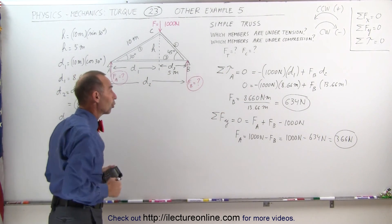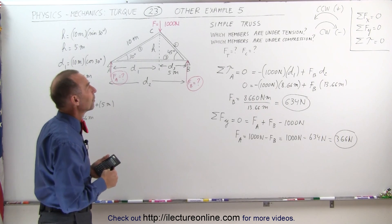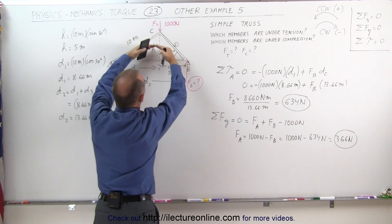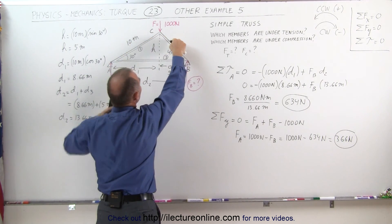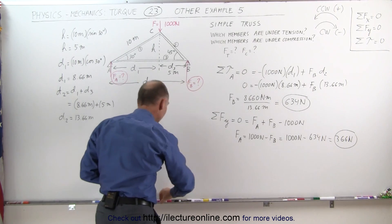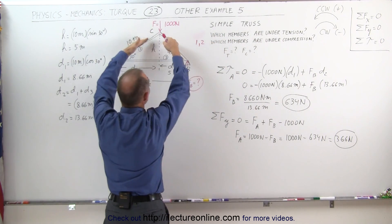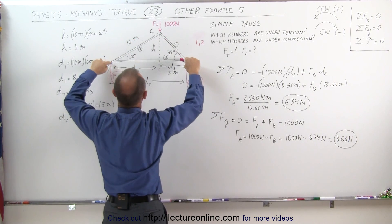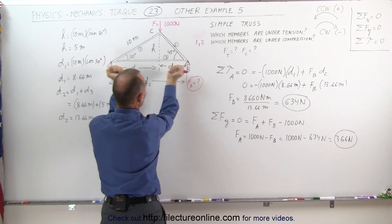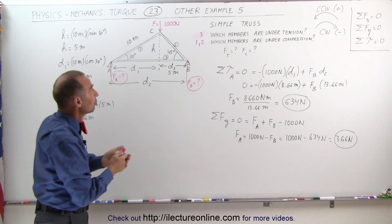We've used the torque portion of the problem to solve for force at A and force at B. Now we want to determine which members are under tension and which are under compression. If we push down on the tip, the two angled members try to spread outward — since they're connected, they push back, meaning members 1 and 2 are under compression. Because members 1 and 2 push on the joints and try to push them outward, member 3 prevents that from happening by pulling back — so member 3 is under tension.